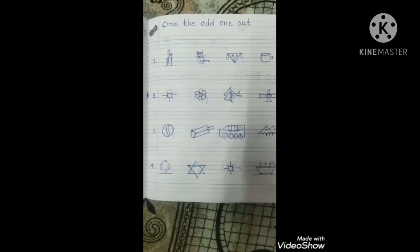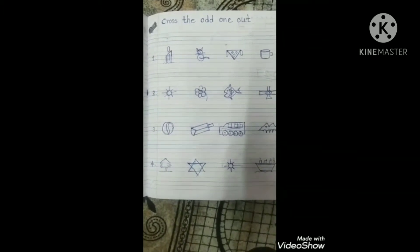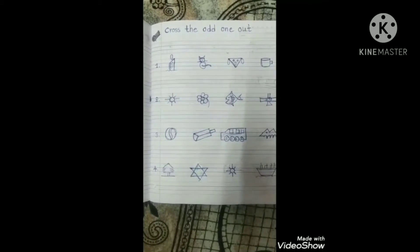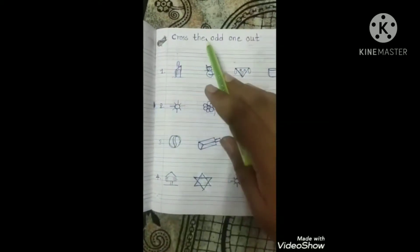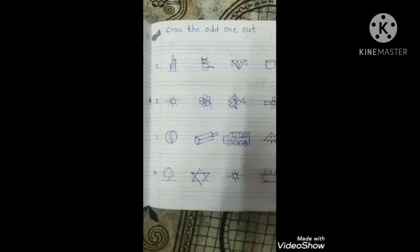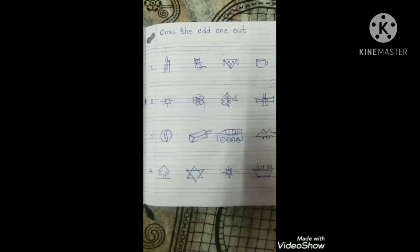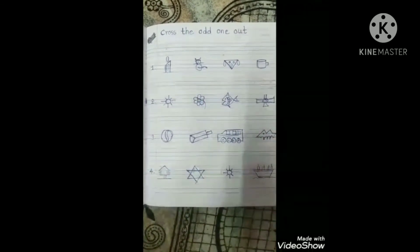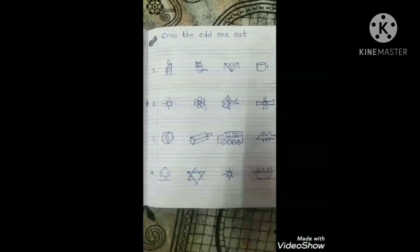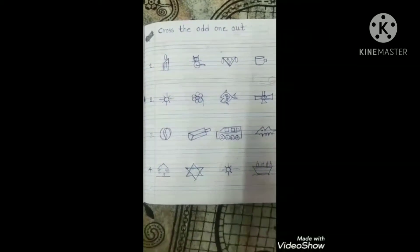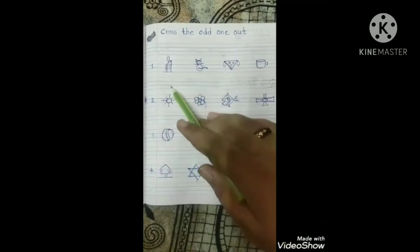Check out your English notebook and see here. Today we are going to revise cross the odd one out. It means the pictures are given in the line, the odd one is different. Okay, what do we need to do? We need to cross out. What do we need to cross out?